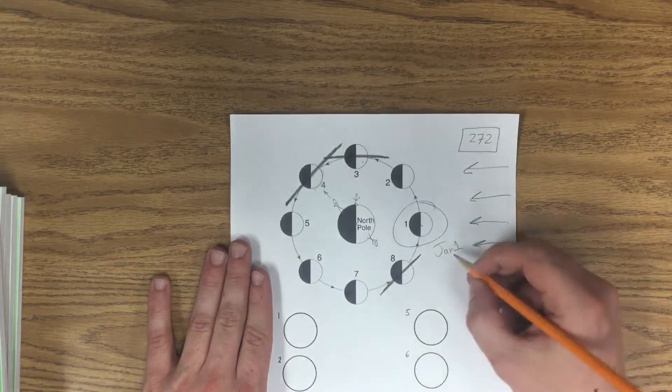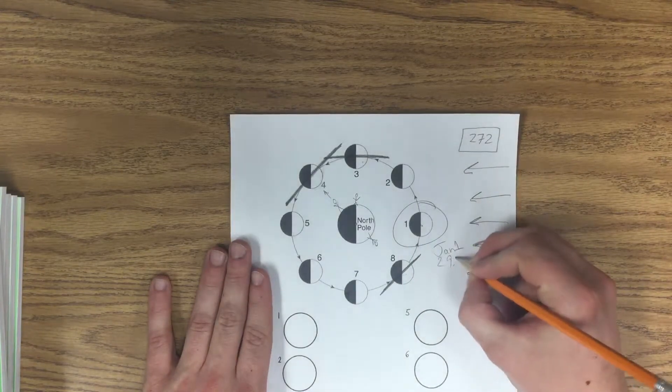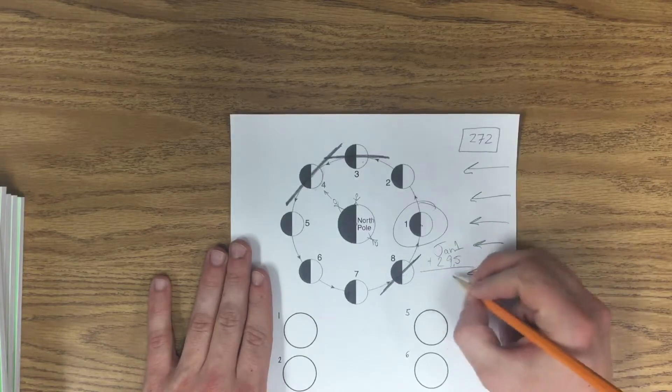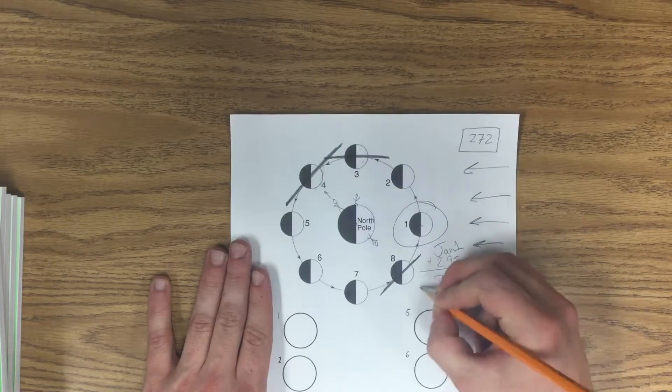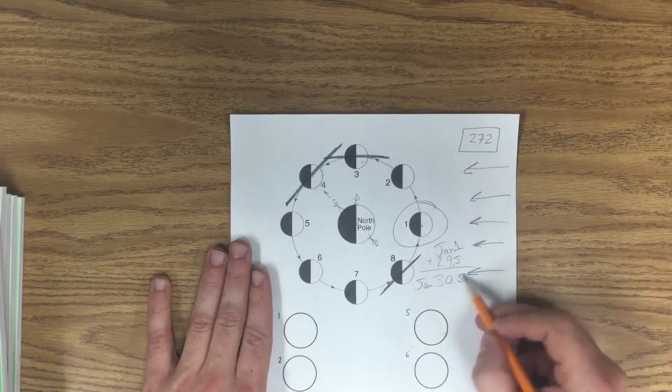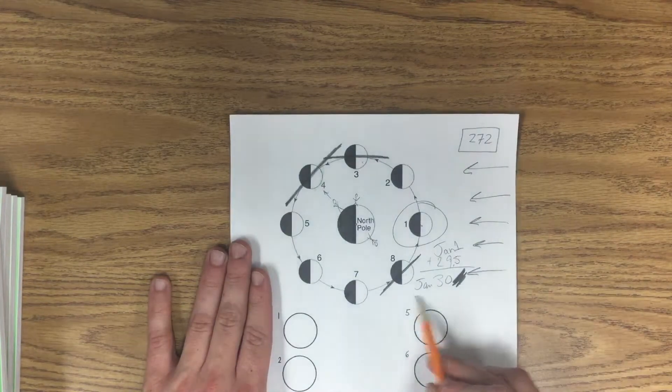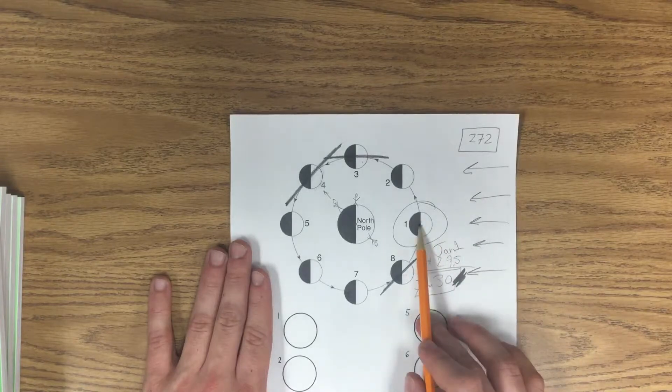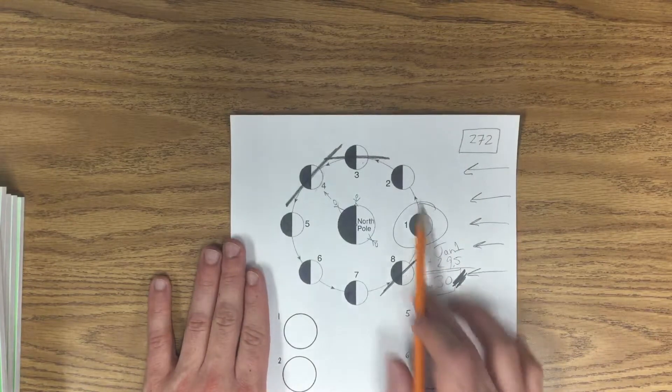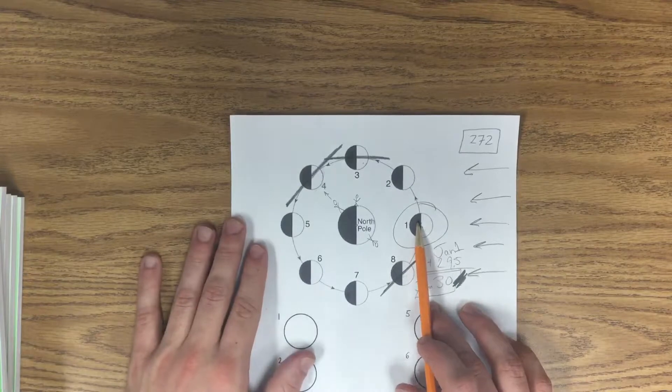So that means in order for it to get all the way back here, 29.5 plus 1 equals 30.5. So January - we take off the point five, we just erase that, we don't round it, we don't do anything like that - January 30th it will return back to this point.